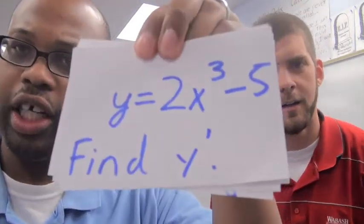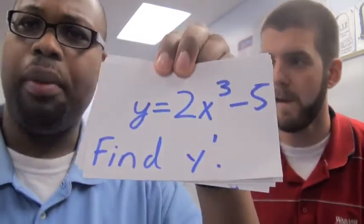Hmm. Am I ready to test myself? Let me look at the front of the card again. y equals 2x cubed minus 5. Find y prime.